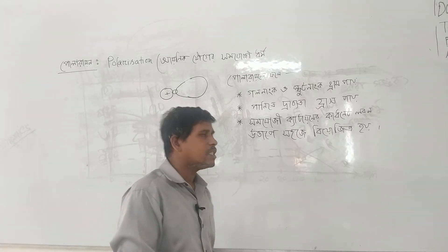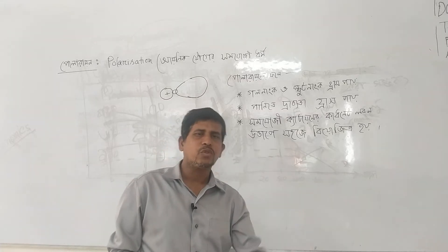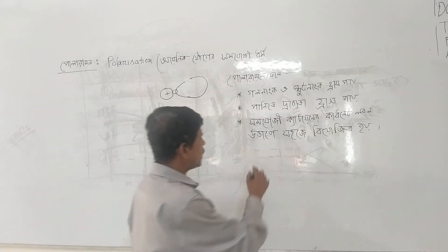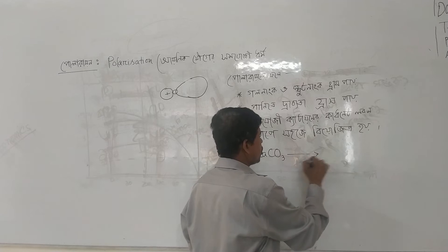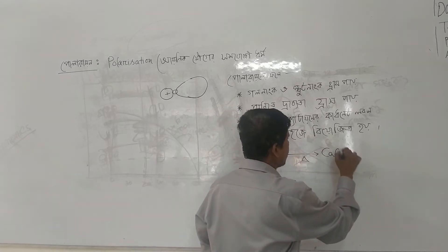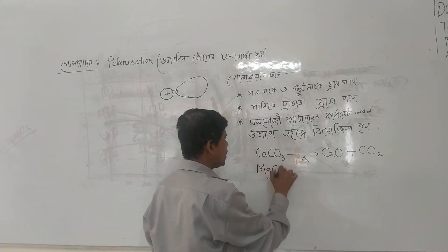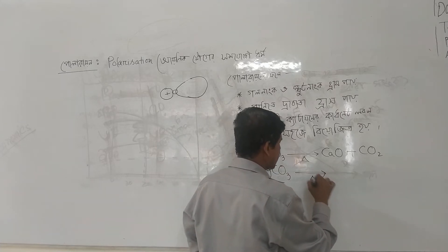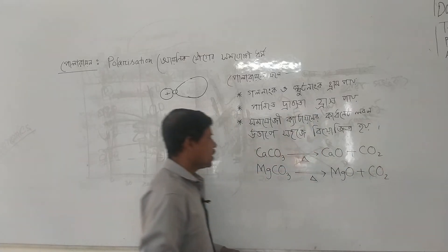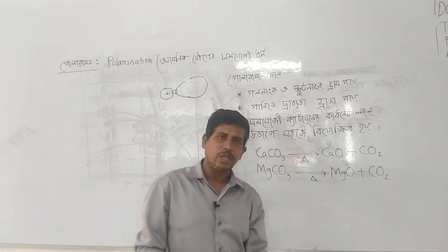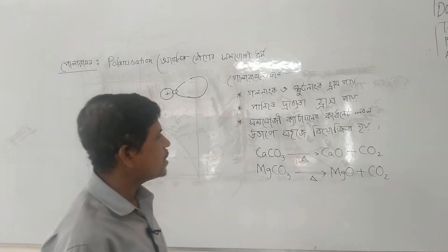We have to think of a compound like nitrogen dioxide or carbon dioxide. For example, when we take calcium carbonate, it decomposes to calcium oxide plus carbon dioxide. Similarly, we have magnesium carbonate, which gives magnesium oxide plus carbon dioxide.